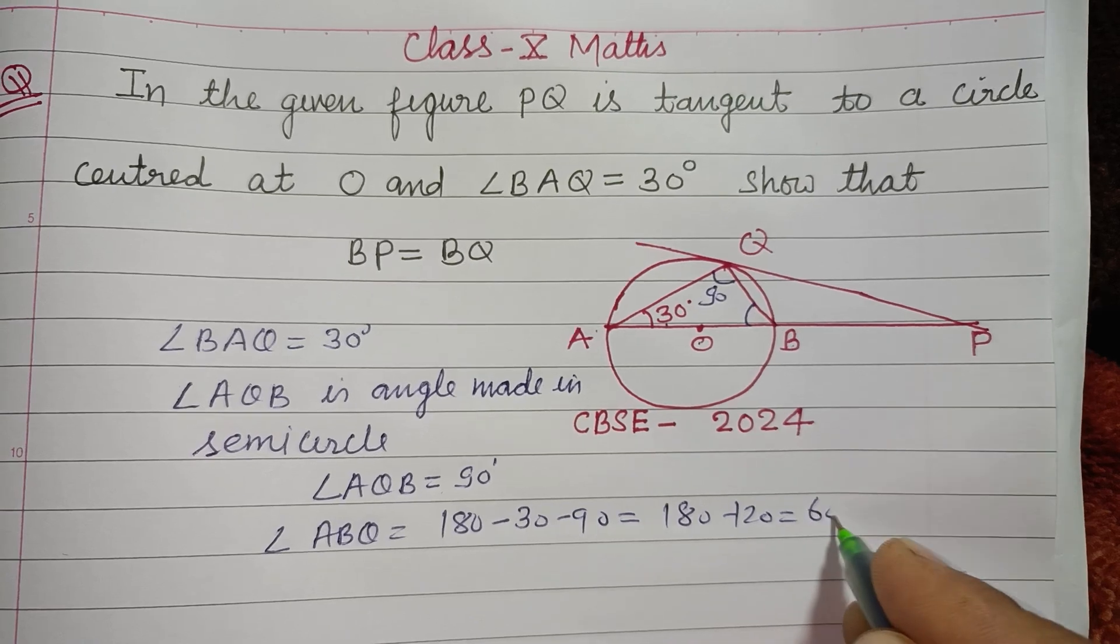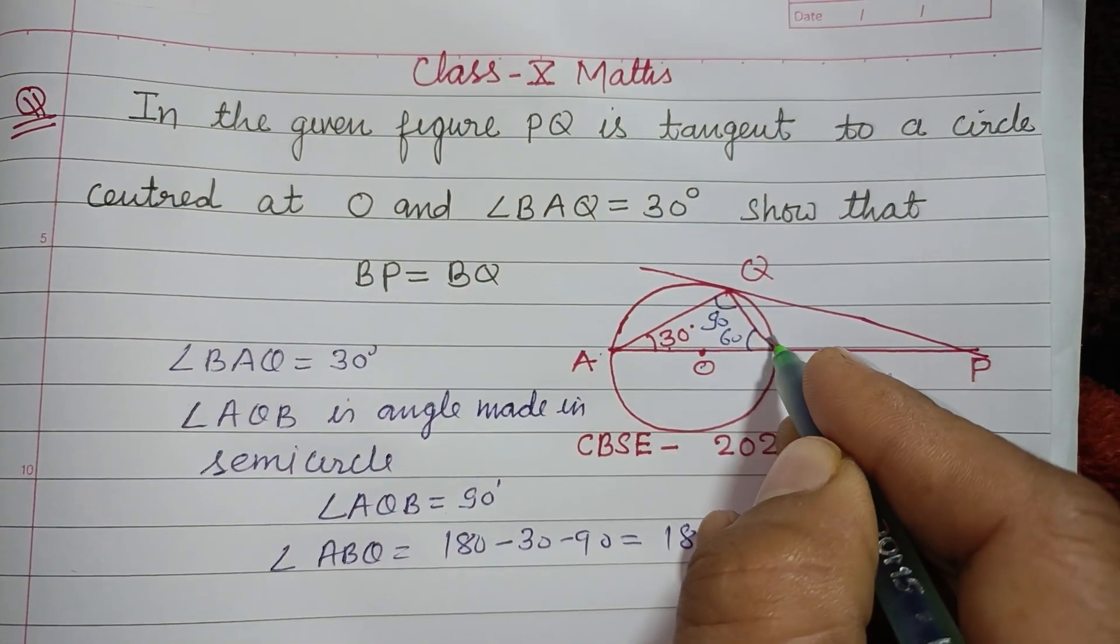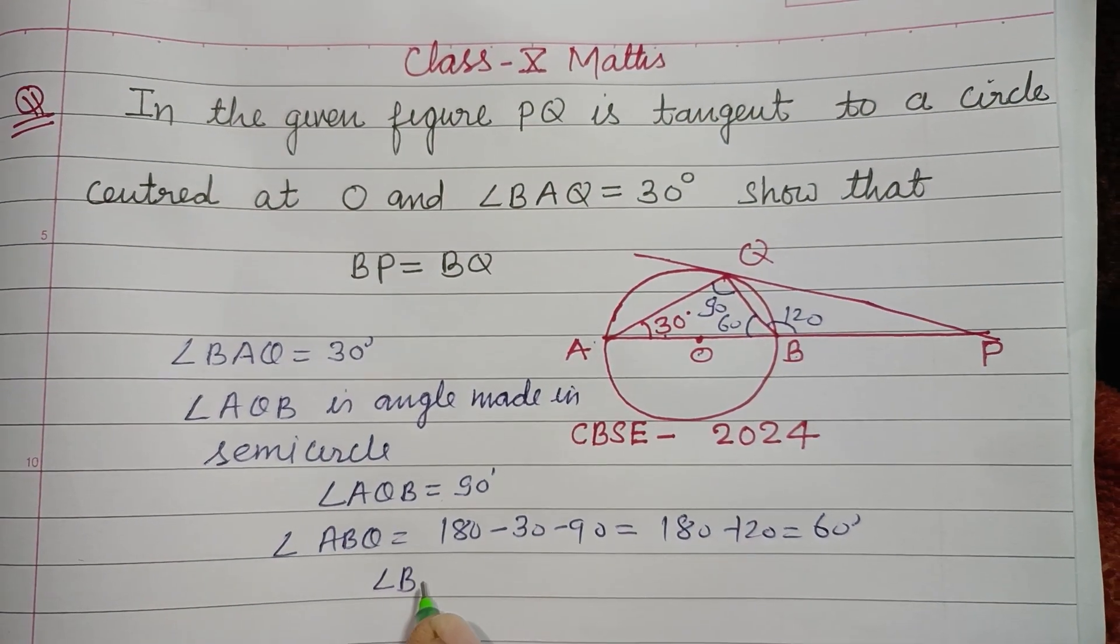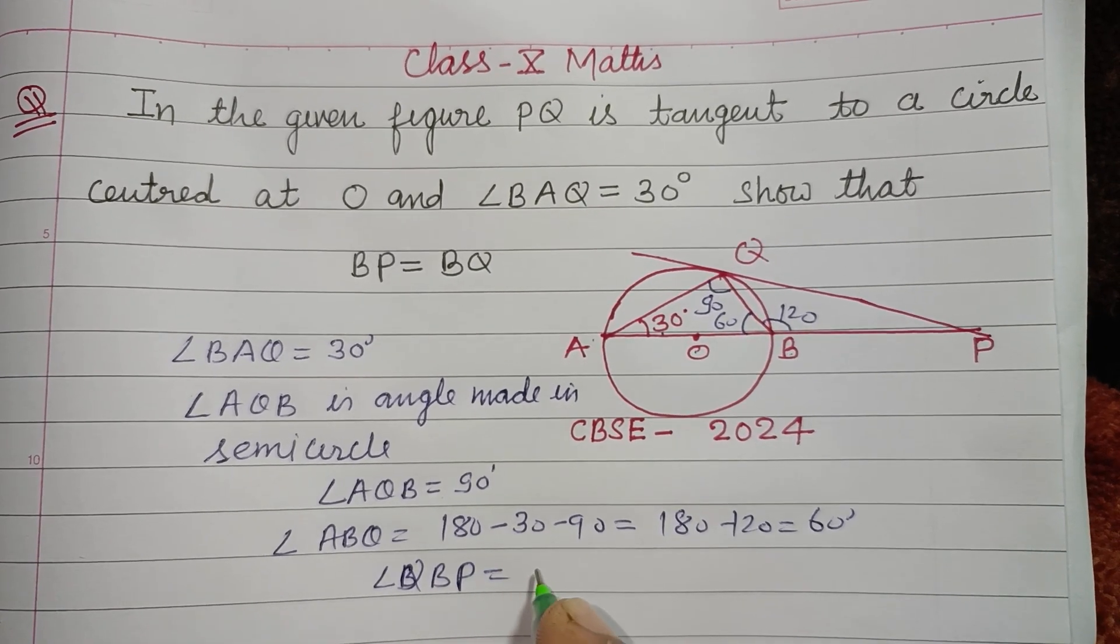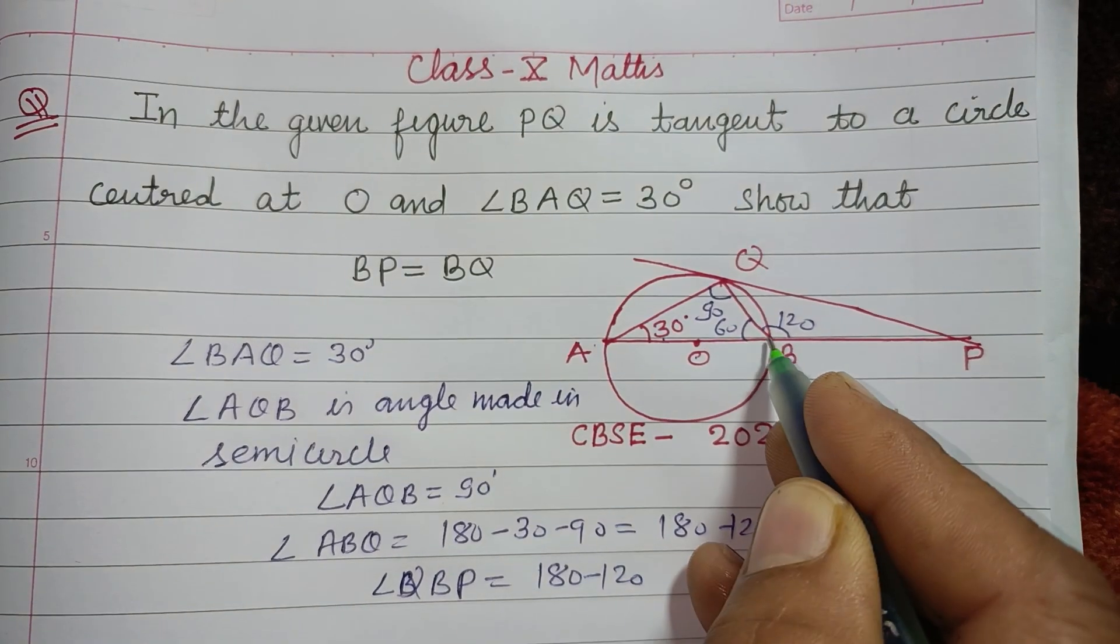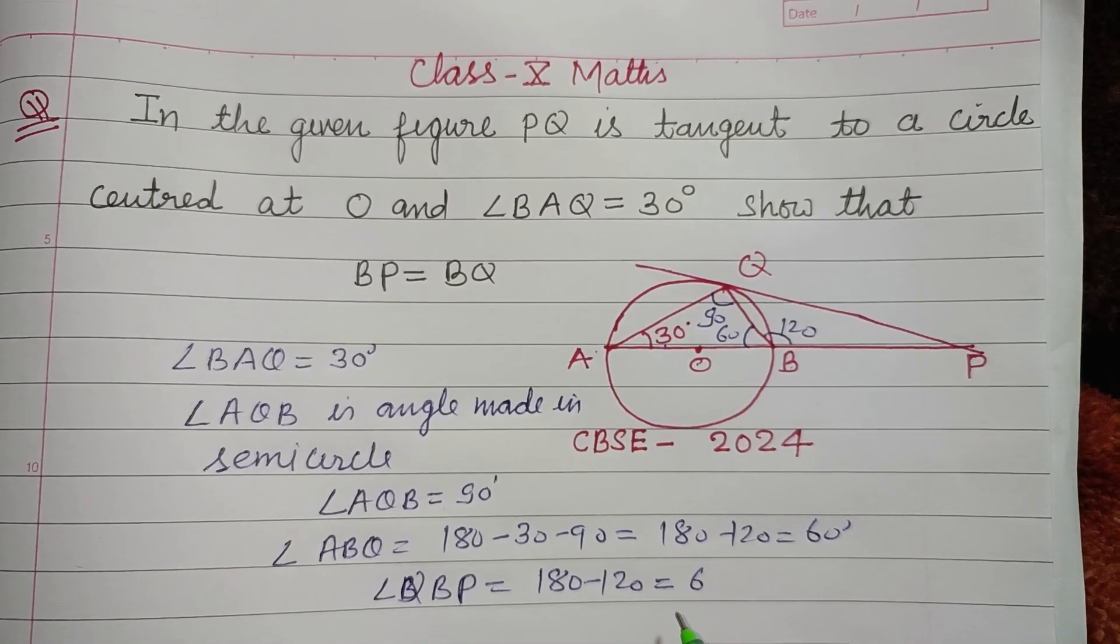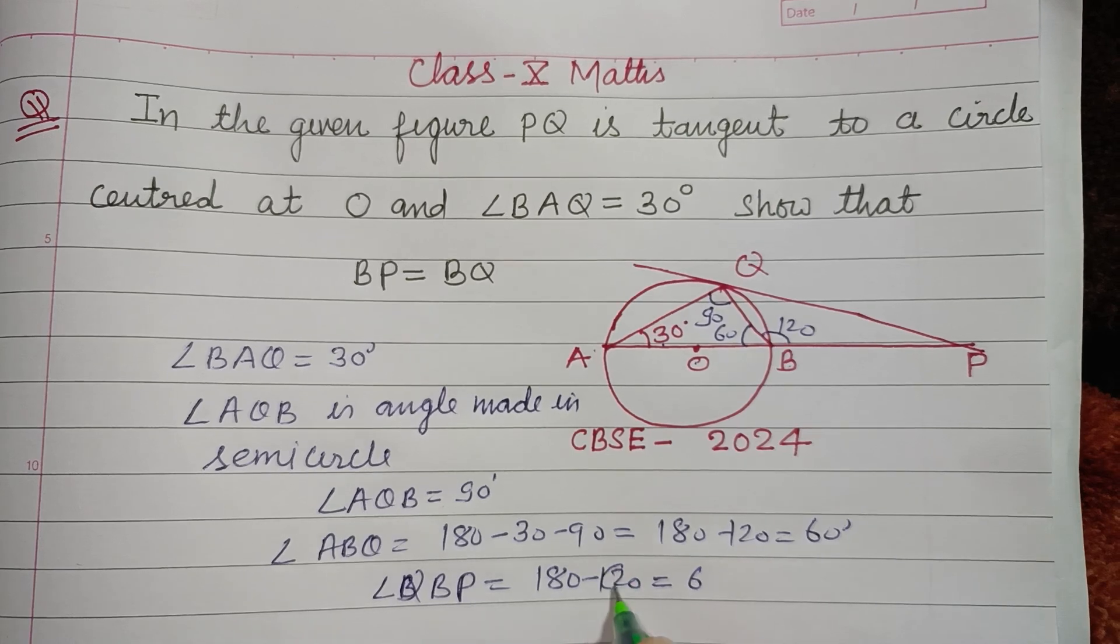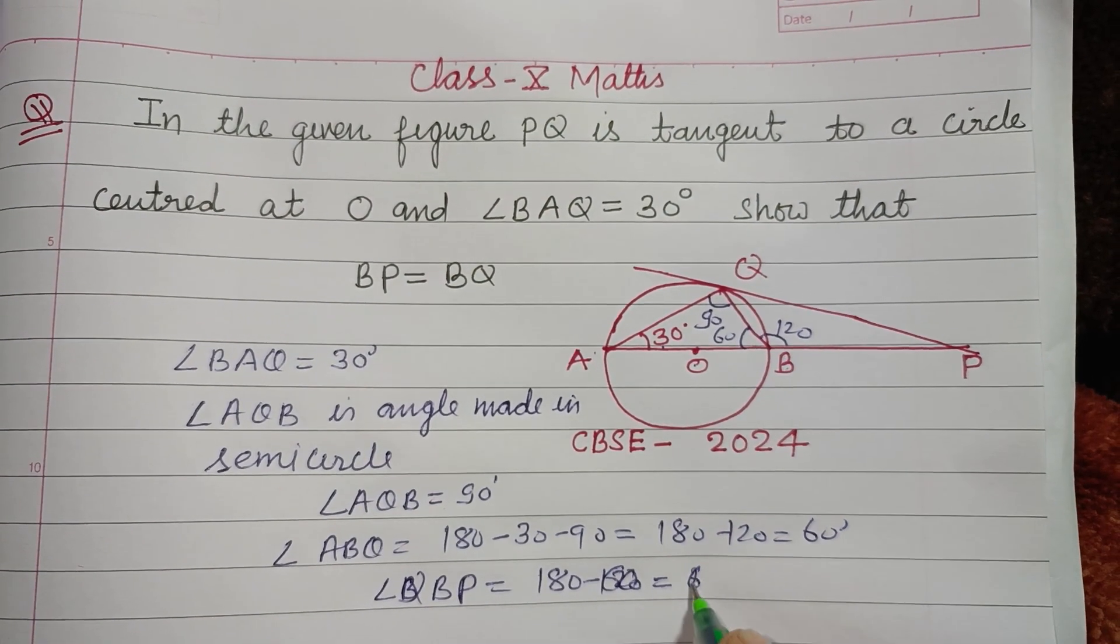So this is 60 degrees. If this is 60, then this is 120. Angle BQP equals 180 minus 120, or using the external angle theorem, 90 plus 30. So this is 60, and 180 minus 60 is 120.